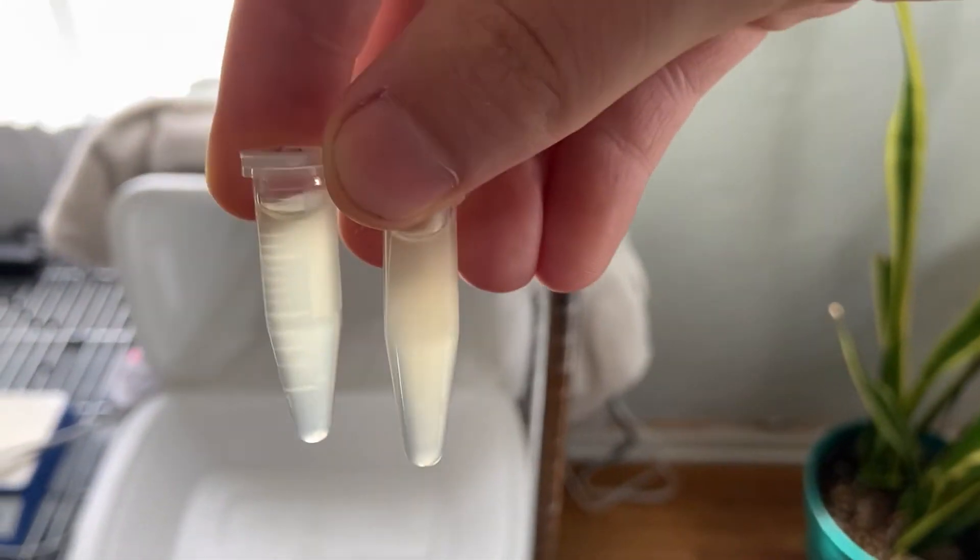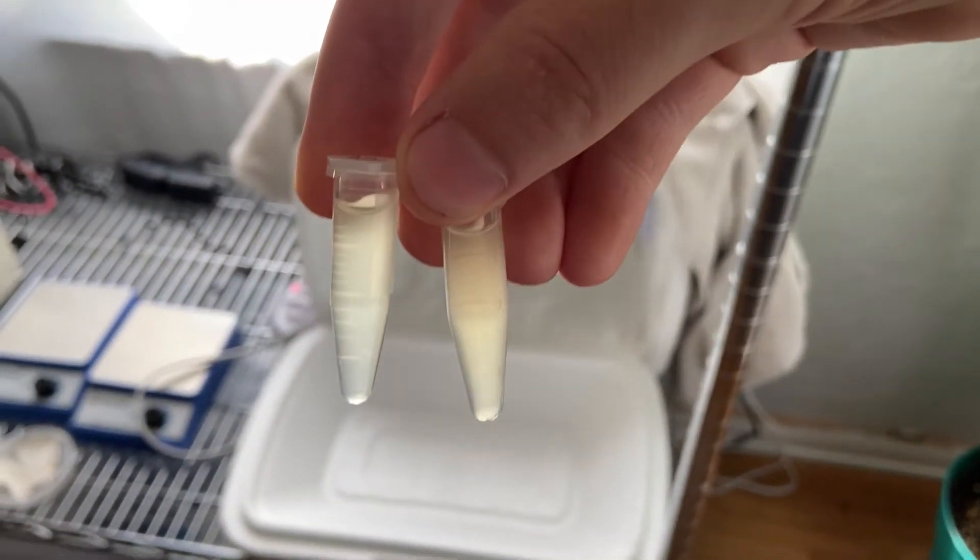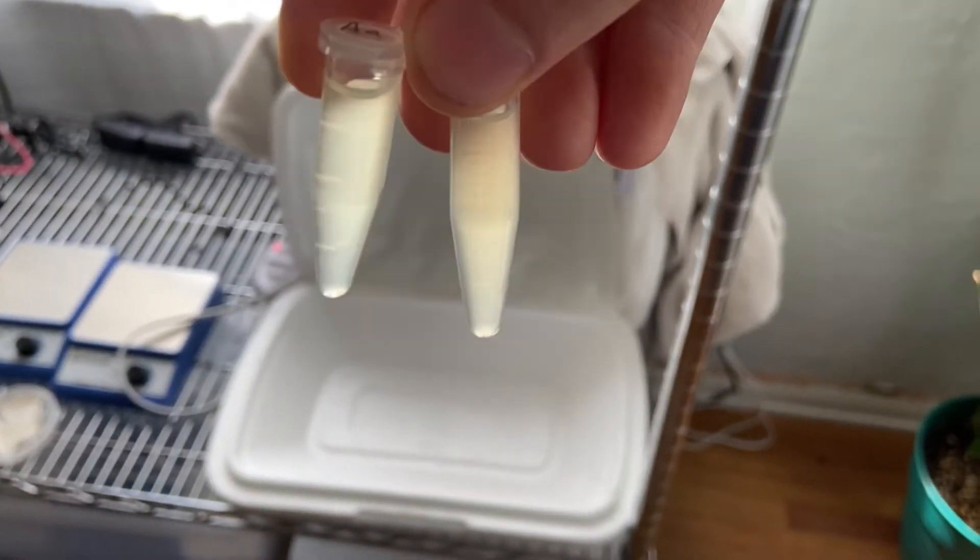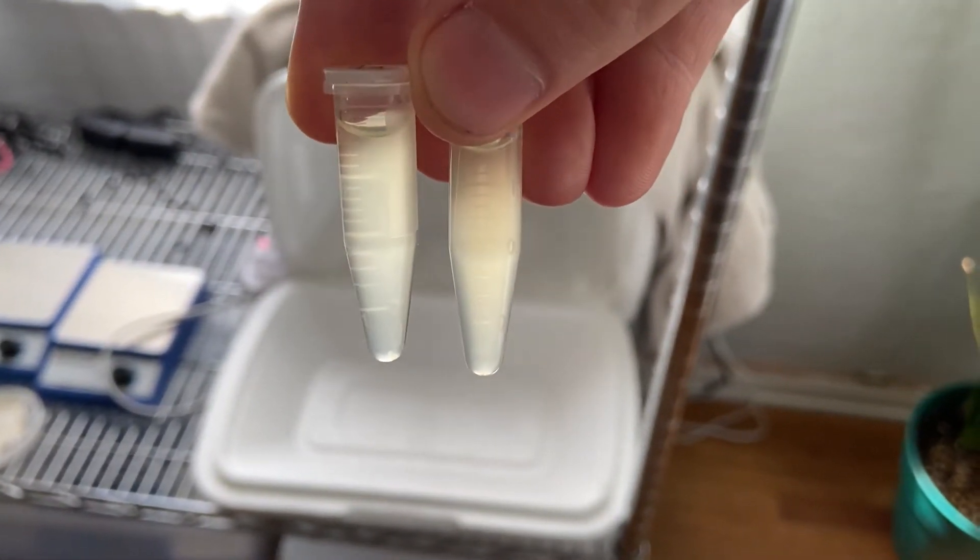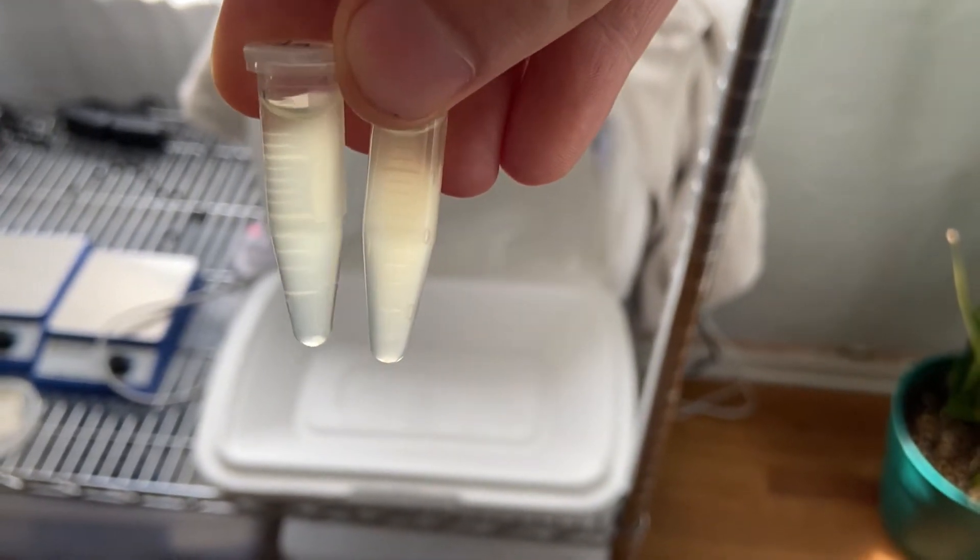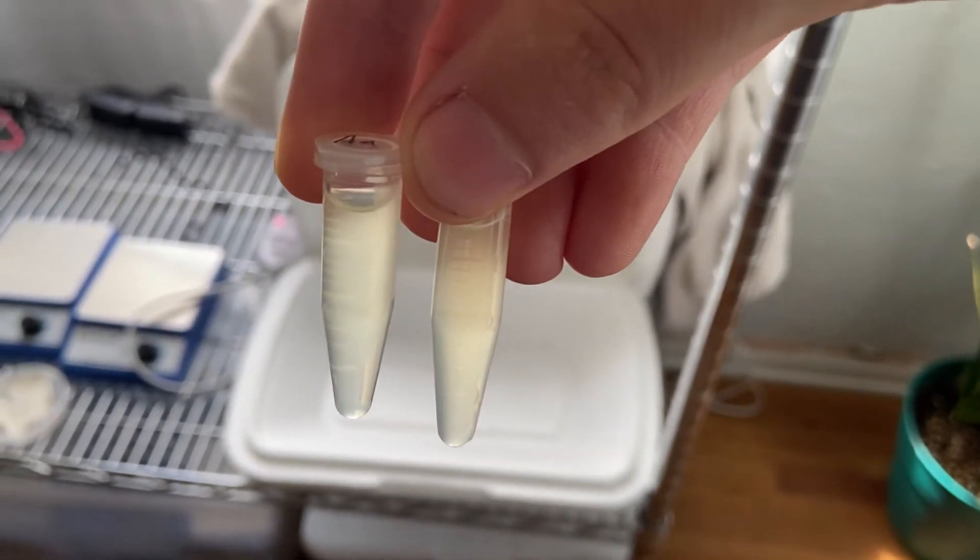It looks like they lived. If you'll recall, I have these labeled AA and BB. In B, I used significantly more cells, so I would expect B to be a bit more opaque than A is, and if you look at it closely, you'll see that B is indeed a bit cloudier than A, so that's a good sign.